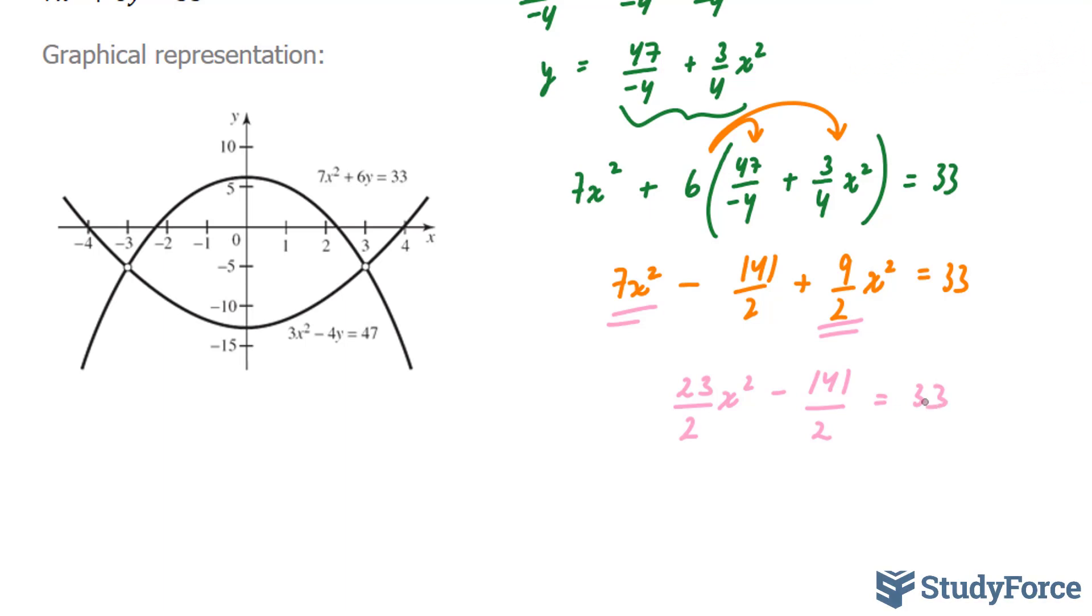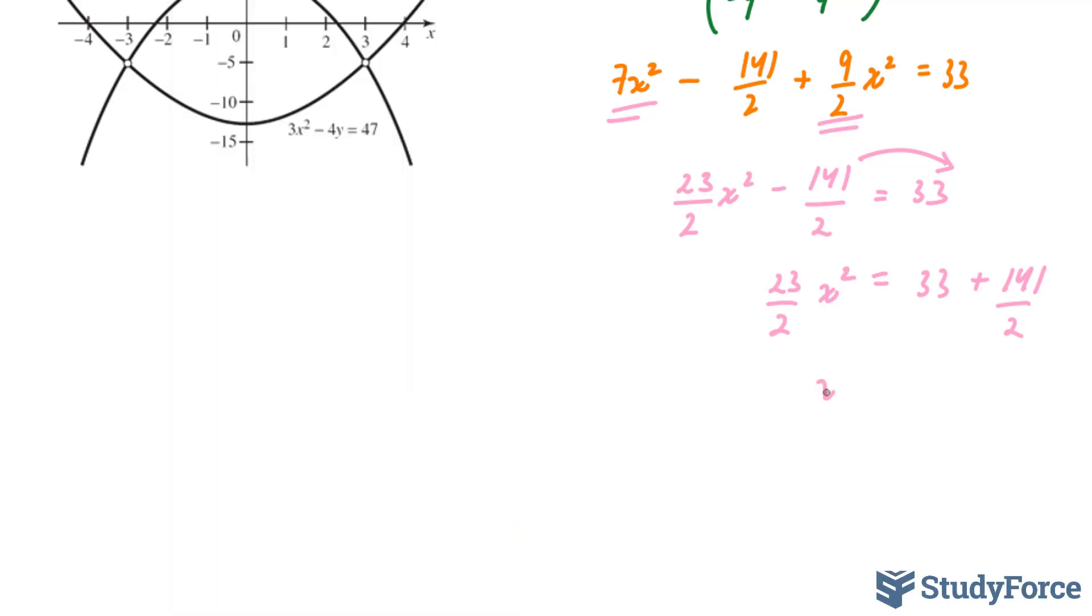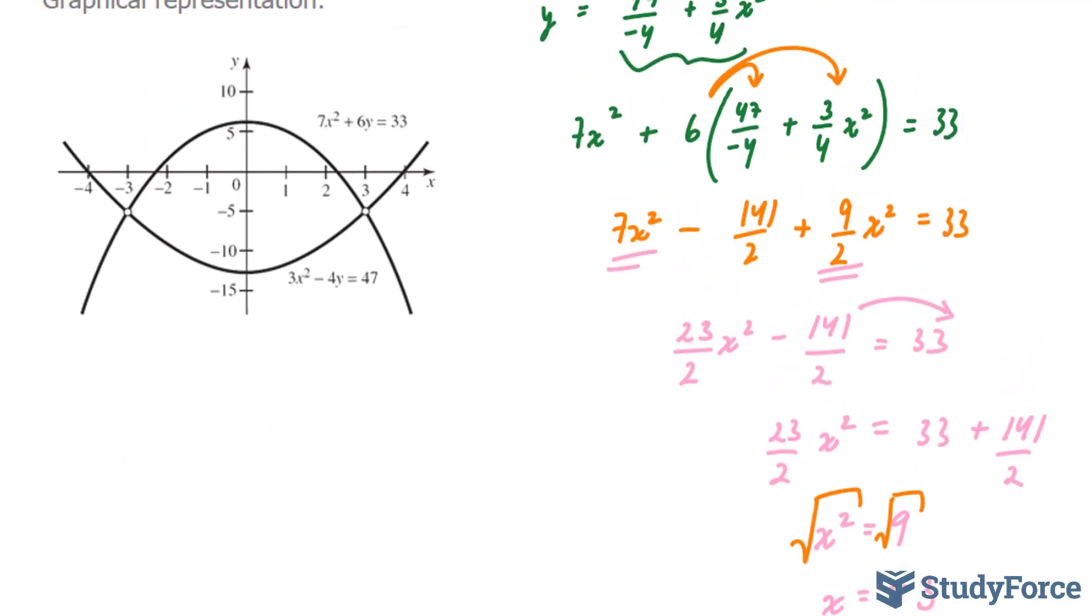We are dealing with a quadratic equation here. And normally what we would do to find our x-intercepts is we would use the quadratic formula. But this quadratic equation does not have an x term. And that makes it a lot easier for us because I can easily isolate for my x by taking this term over. 33 plus 141 over 2. I can sum these two terms up and then divide both sides by 23 over 2. Let me show you what I mean. 33 plus 141 over 2 divided by 23 over 2. And this gives me x squared is equal to 9. Now I can square root both sides where I end up with x is equal to plus minus 3. Just in case you're confused, I square root both sides and I ended up with plus minus 3. What can I do with these numbers?